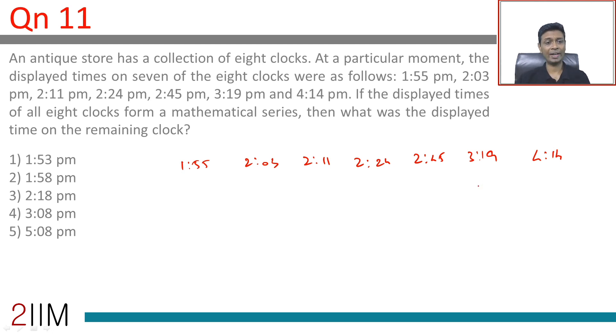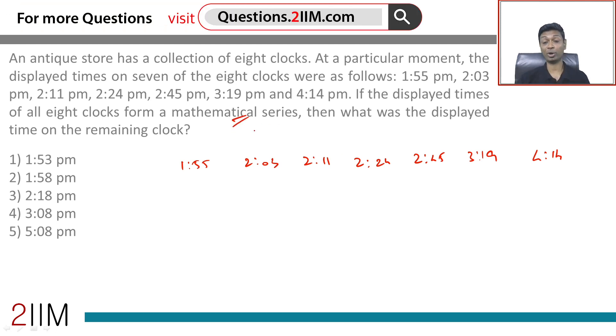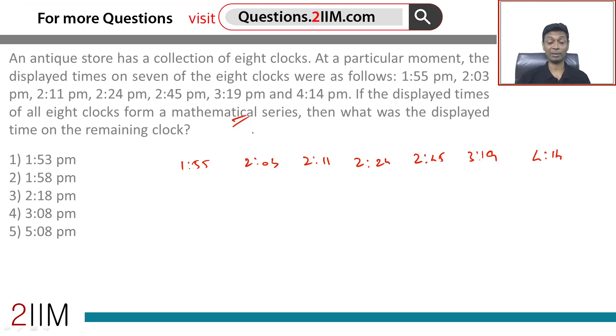If the displayed times of all 8 clocks form a mathematical series - this is very interesting. It's not a geometric progression, it's not an arithmetic progression, it is a mathematical series. It's a lovely question. The mathematical series has one number missing; it could be anywhere - it could be first, it could be right at the end, it could be anywhere in between.